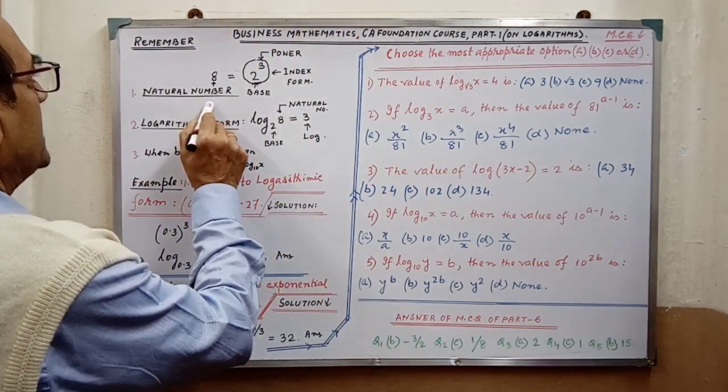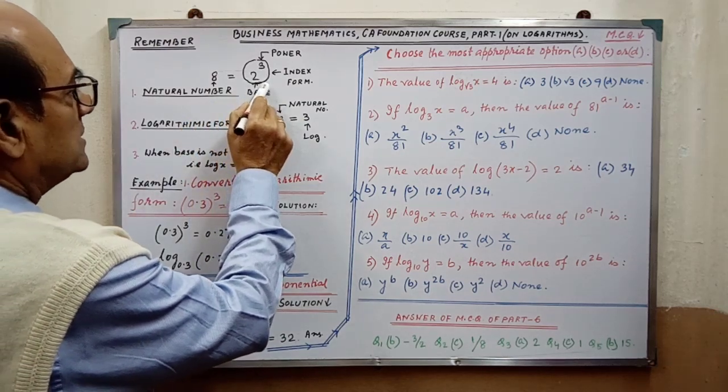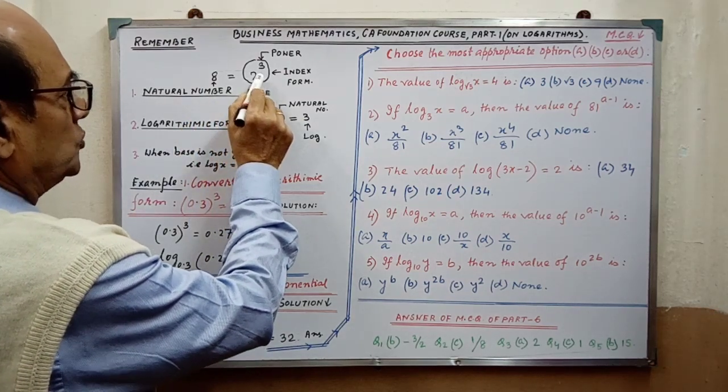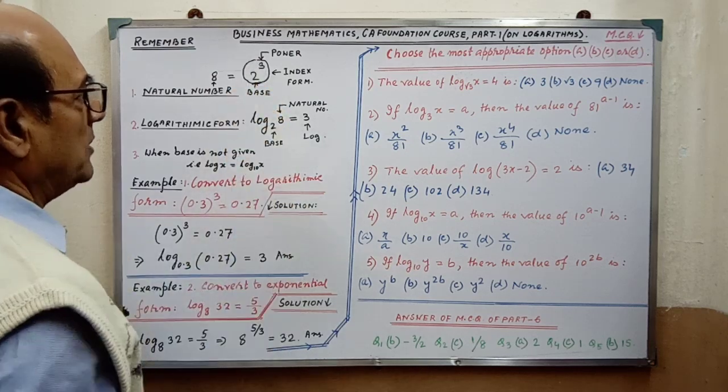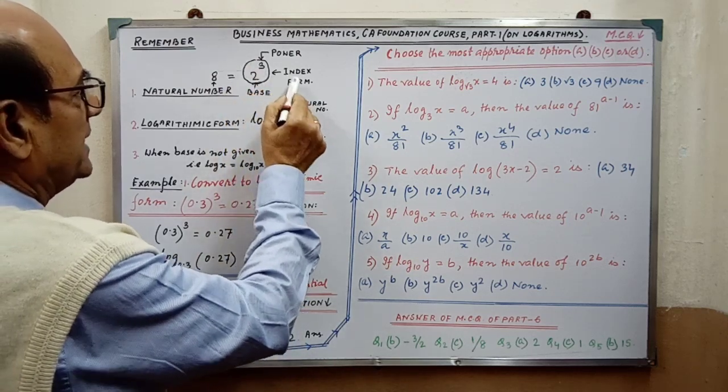8 is the natural number that we may write. 2 is the base and 3 is the power. This is in index form.